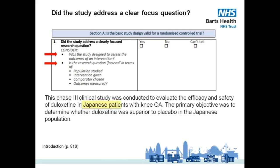Our patients are Japanese patients with knee osteoarthritis. The intervention is the drug duloxetine. The comparison is a placebo. The outcomes measured are efficacy and safety.